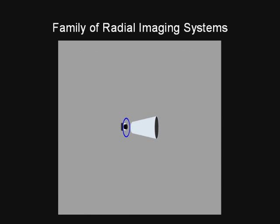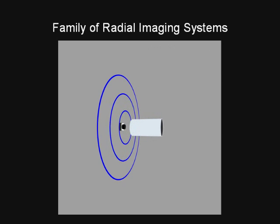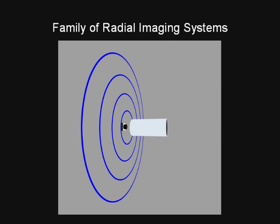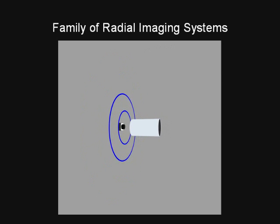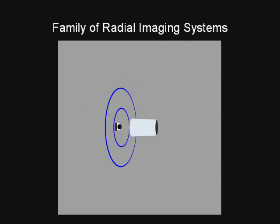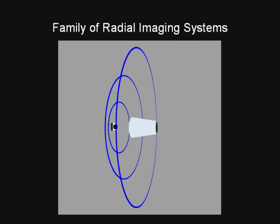By varying the parameters of the mirror and its distance from the camera, we obtain a complete family of radial imaging systems. Notice that many configurations have multiple circular loci of virtual viewpoints, due to inter-reflections within the mirror.